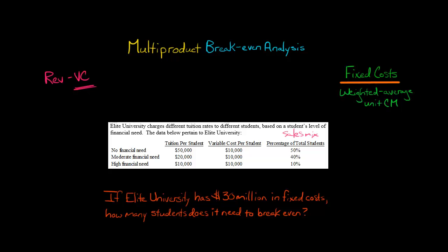The weighted average contribution margin depends on the sales mix — the percentage breakdown of each type of student. For a student with no financial need: $50,000 price minus $10,000 variable cost equals $40,000 contribution margin, multiplied by 50%, giving us $20,000. For moderate financial need: $20,000 minus $10,000 equals $10,000, multiplied by 40%, giving us $4,000.